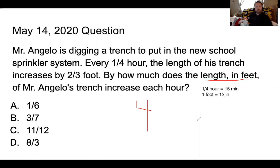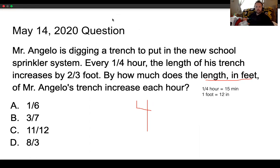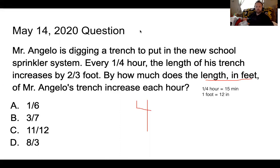So, what's our correct answer? It's either going to be one-sixth of a foot, three-sevenths of a foot, eleven-twelfths of a foot, or eight-thirds of a foot. Just like last time, I'm looking for the correct answer and how you got that correct answer. You're getting graded on two different things: the correct answer and how you got to that correct answer. If you have any questions, please come and find me. Otherwise, have a great rest of your day.